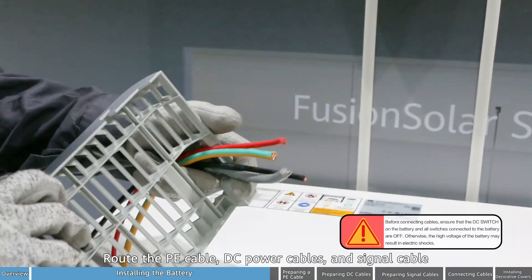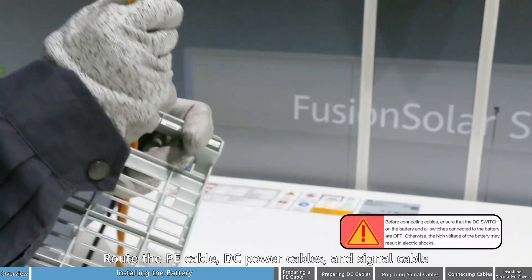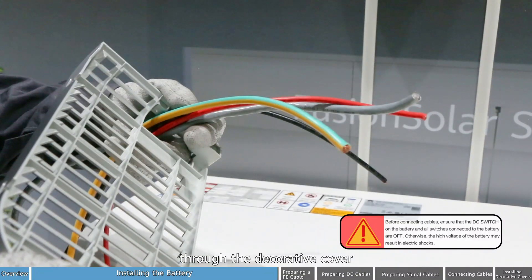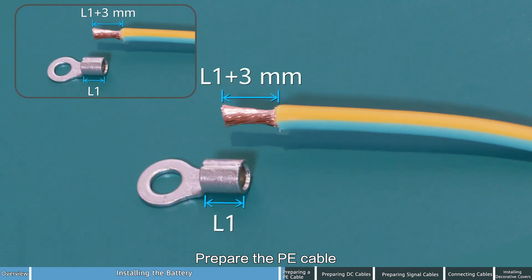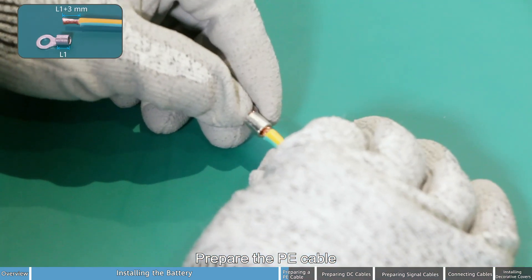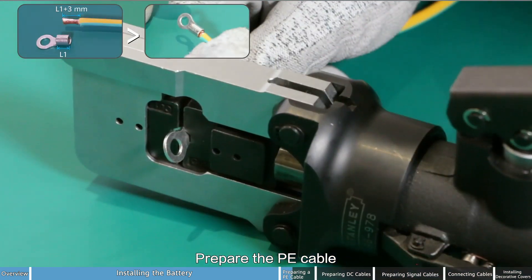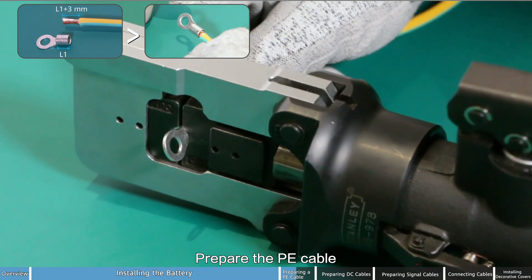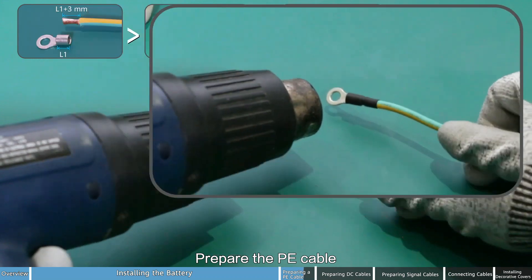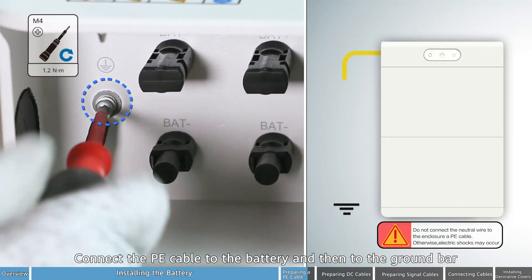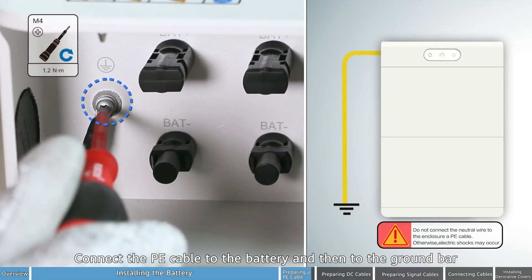Route the PE cable, DC power cables and signal cable through the decorative cover. Prepare the PE cable. Connect the PE cable to the battery and then to the ground bar.